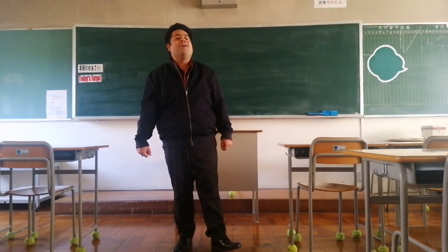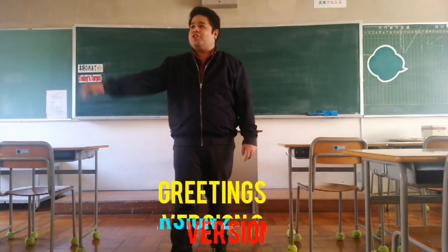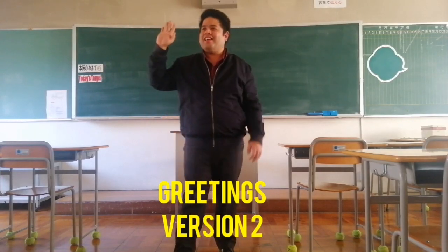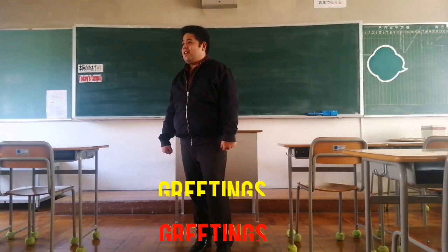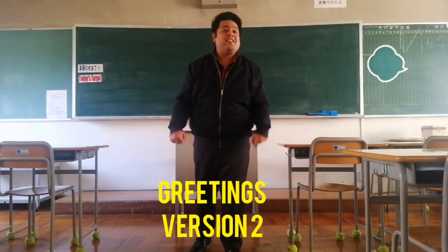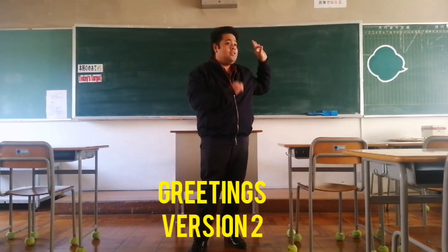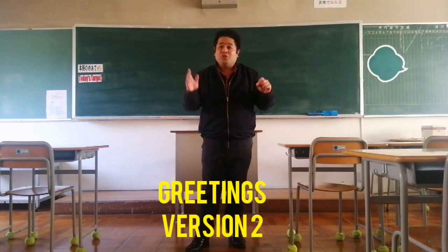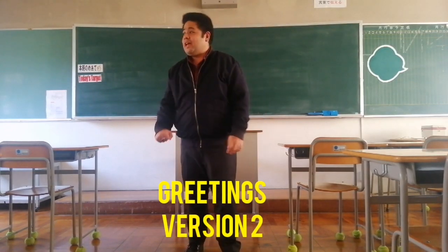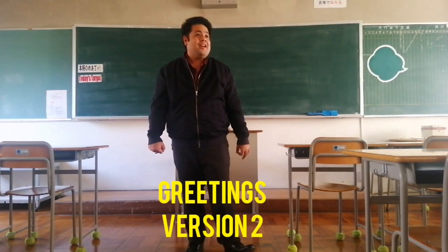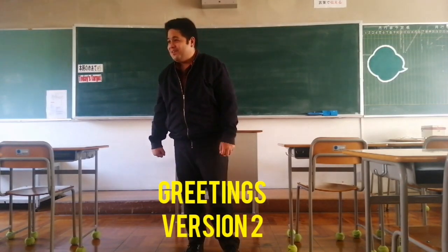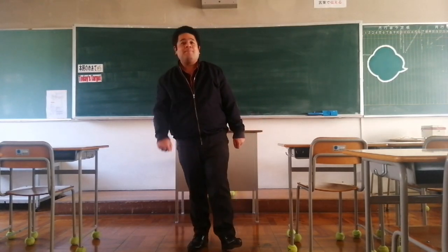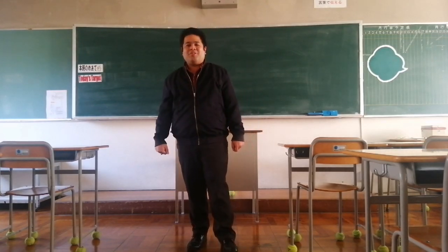Good morning, everyone. How are you? So for you to sit down, please answer the following questions. What did you have for breakfast? He had toast for breakfast. Very nice. How many classes did you have yesterday? You had six classes yesterday. What do you like to do in your free time? He likes to listen to music during his free time. Where would you like to visit in Japan? He would like to visit Hokkaido. What sports can you play? He can play volleyball. Me too! Very nice. Let's start English class.